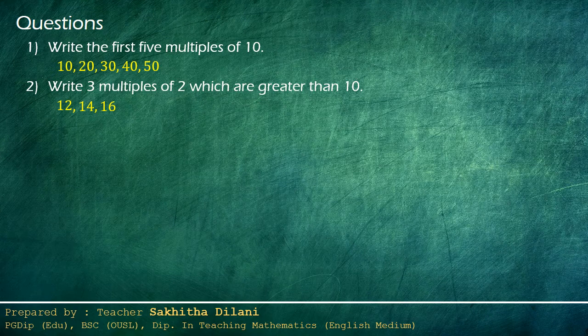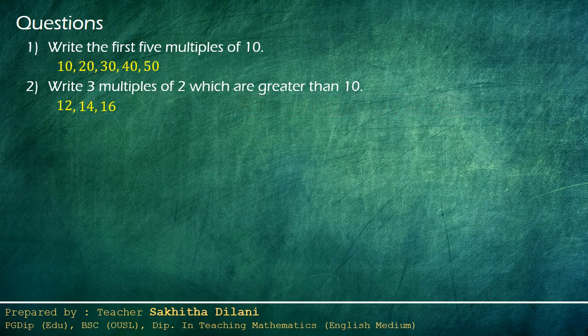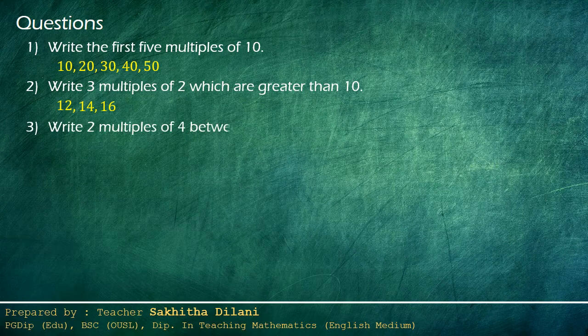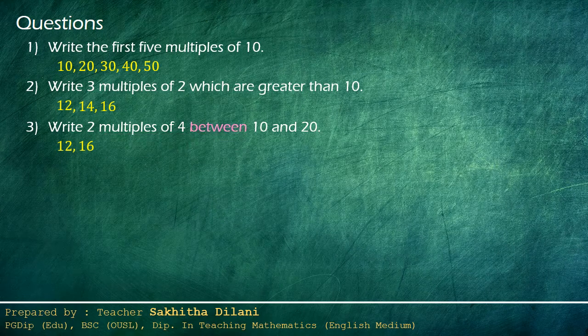You can write any three multiples of two greater than ten. The third question: write two multiples of four between ten and twenty. You have to include the multiples of four between ten and twenty. What are the multiples of four between ten and twenty? They are twelve and sixteen. You can't include twenty, because it is given that between, so you can't include twenty.